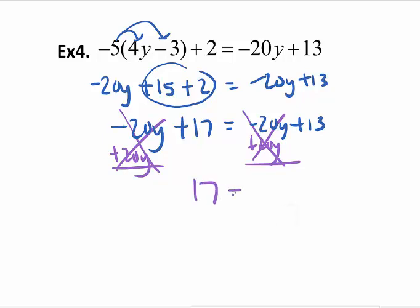Now I get 17 equals 13. That's a false statement. So my answer here should be no solution. My answer is empty set. That's a quick refresher on 2.3 solving equations.